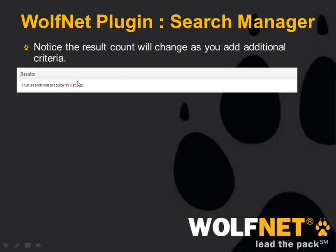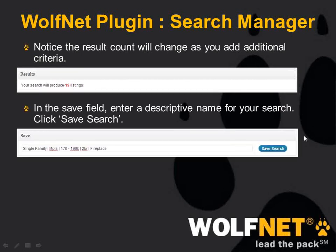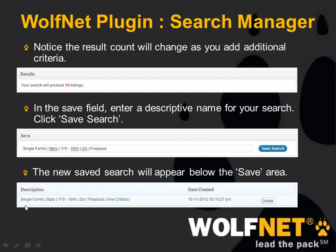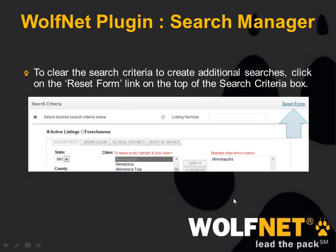Once you have all that selected, the result count will update at the top as well. Down below under the save field, in this example we named it using the criteria we used so it's easy to come back to and find in a list. If you're making a lot of posts with different sorts of featured properties or listings, you want to give them specific titles so you can come back to them easily. Once you hit save, it'll show up in a description field below with your saved search data created. You can click on view criteria to remind yourself what was included, and you can also remove old ones by clicking delete. There's a reset form link in the top right that will zero everything out and allow you to create a new search.